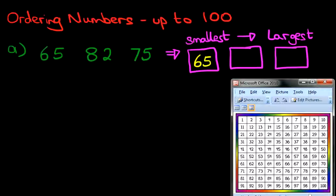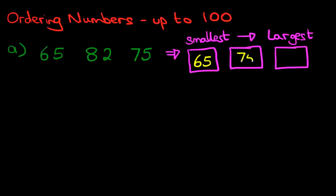Or is it 82? Well, that's right. The closest one is beginning with seven. It's 75. And that leaves the last one, which is 82.